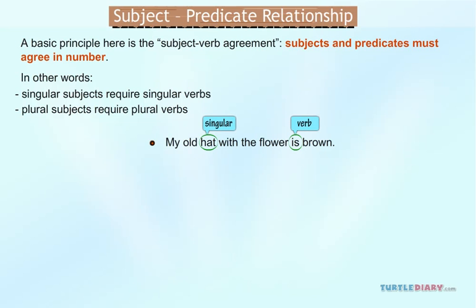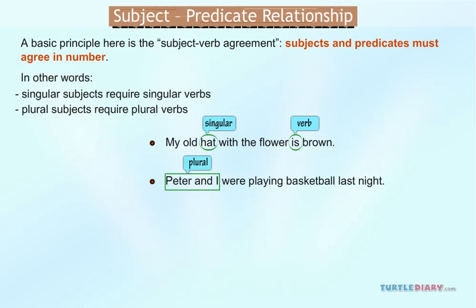'Peter and I were playing basketball last night.' Here, the compound subject is plural — it's Peter and I. Hence, the verb 'were' is plural.